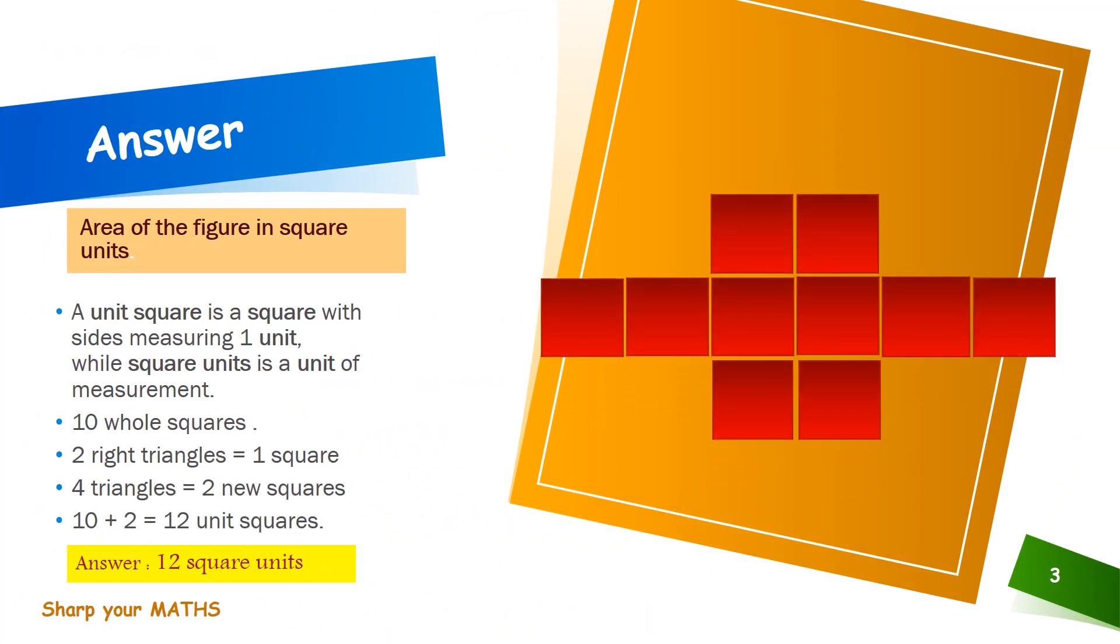Hope you have guessed that answer. Yes, it's 10 whole squares plus two new squares which we can get by joining the two triangles. So the area of this figure is 12 square units.